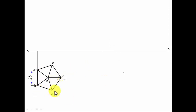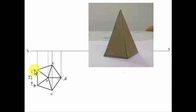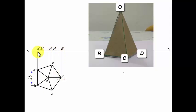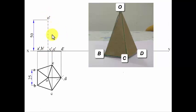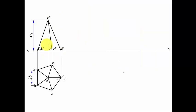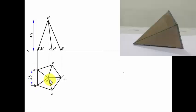Now looking at the object from the front, we draw projector lines. Points A-dash and B-dash, C-dash and E-dash, and D are marked. The axis length is 50mm, so from the axis base point we go up 50mm to locate O-dash. The slant edges B-O, C-O, and D-O are visible from the front and are drawn with solid lines. Step one is now complete, with the solid resting with its base on the HP.